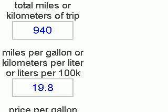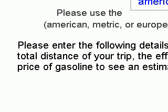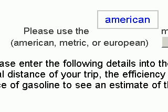Last but not least, we're going to put in our price per gallon: $3.65. There is a question down here that asks which measurement system you would like to use. The calculator defaults to the American measuring system, so if you live in the United States, you do not need to change this at all.